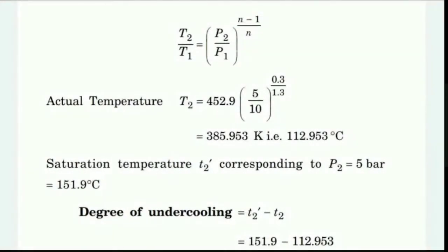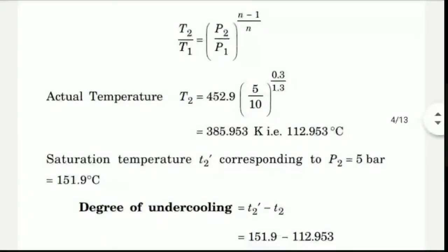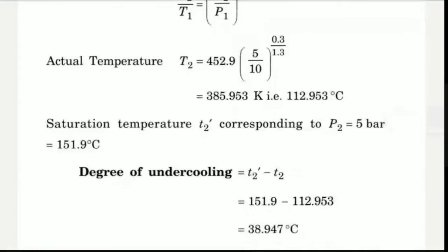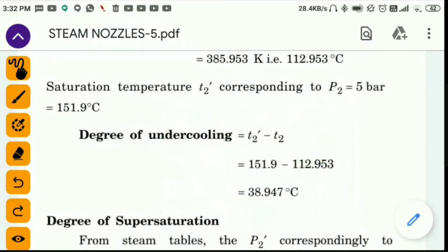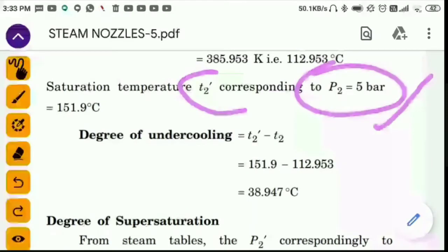We use T2 dash, which is the saturation temperature corresponding to P2 equals 5 bar. We need to find T2 dash from the steam tables. When you enter 5 bar in the steam tables, you will get the value T2 dash equals 151.9 degrees Celsius.